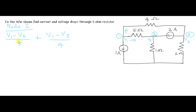Then you have a 1 ampere current source. As you know, P/R gives you current, so here the current is directly written as 1. This current is also leaving, so you take it as plus 1 equal to 0 — the algebraic sum of currents meeting at a junction is equal to 0, according to Kirchhoff's Current Law. Taking LCM of 20: 4V1 minus 4V2 plus 5V1 minus 5V3 plus 20 equals 0.